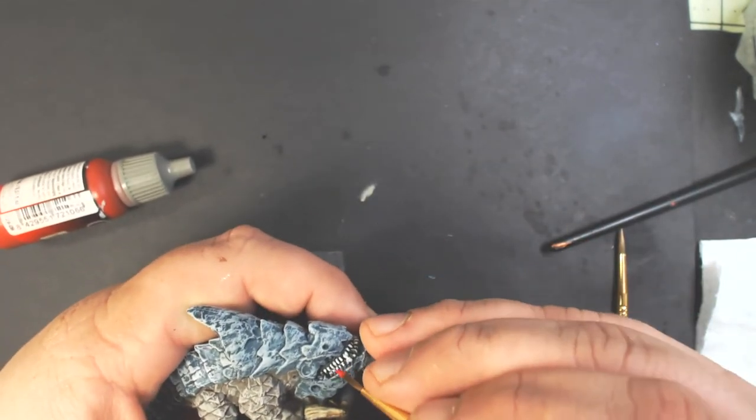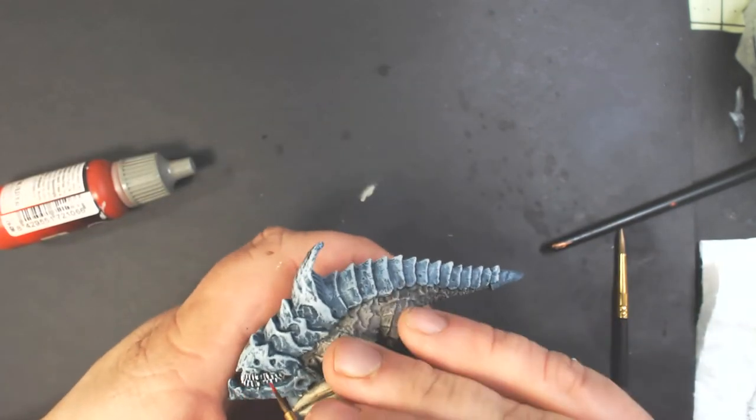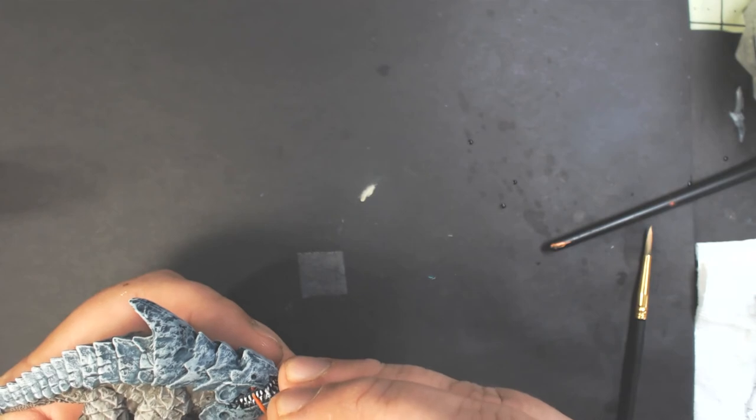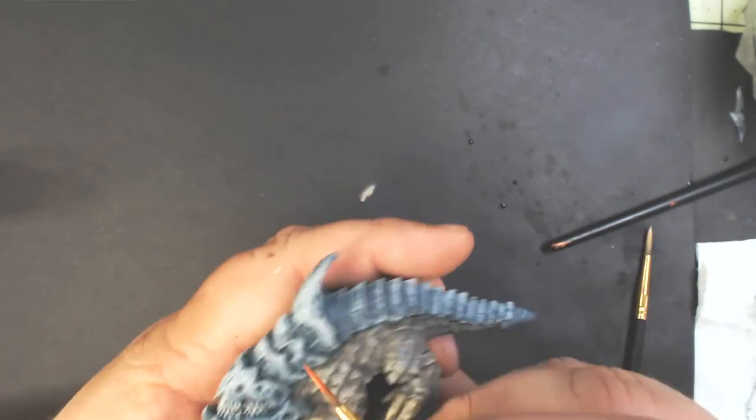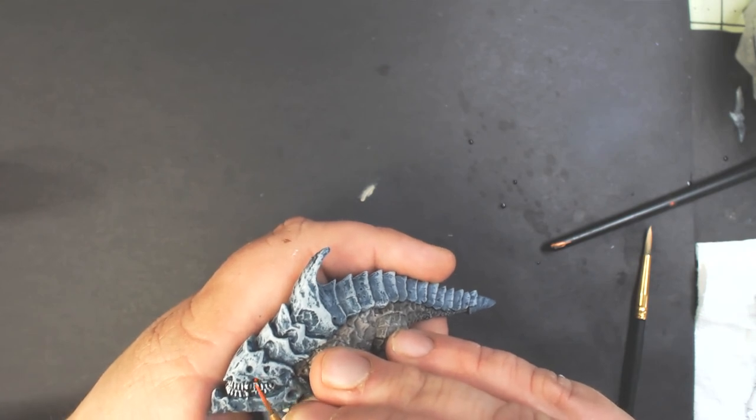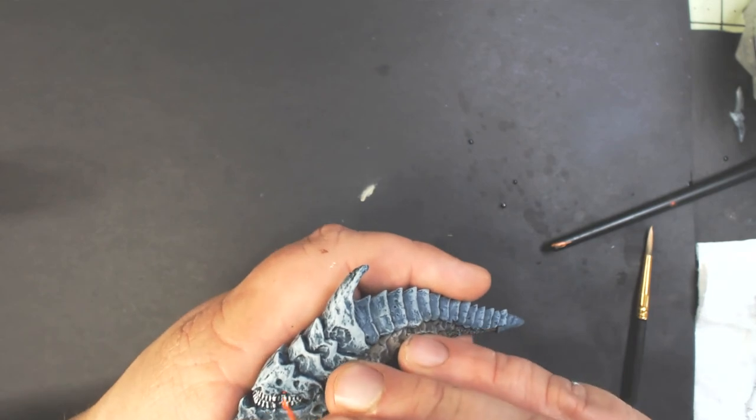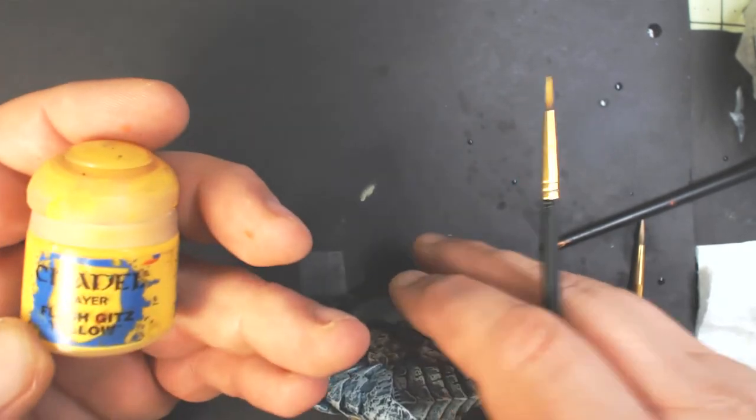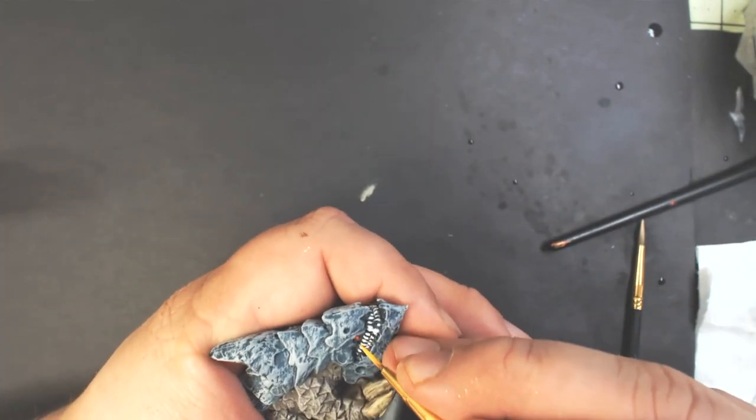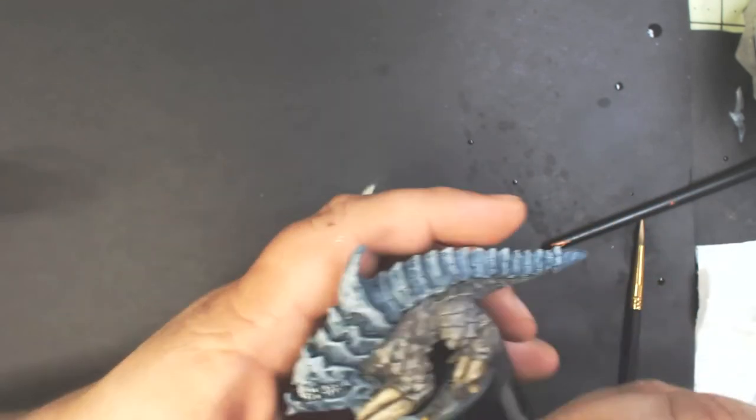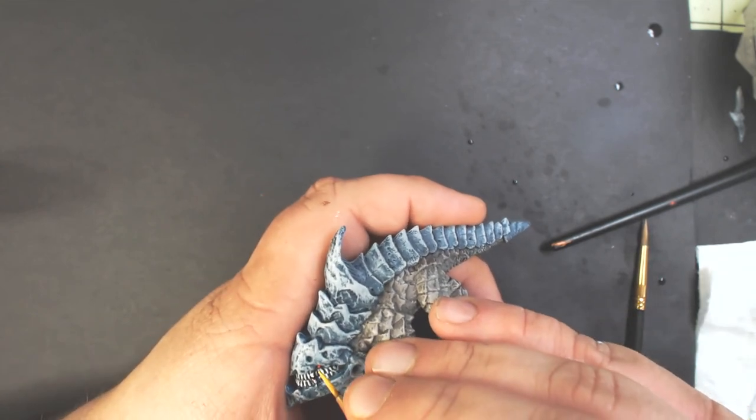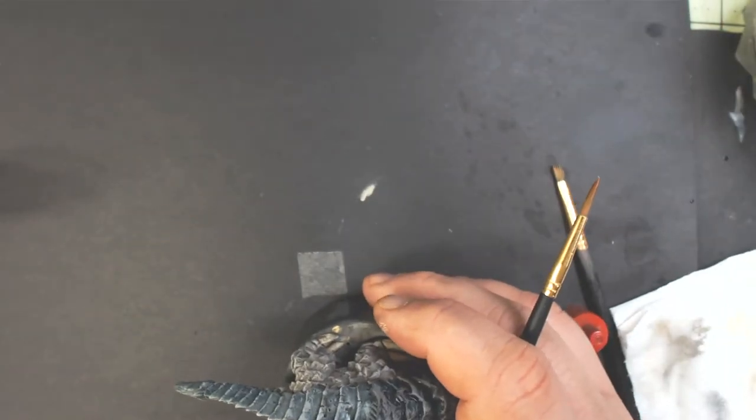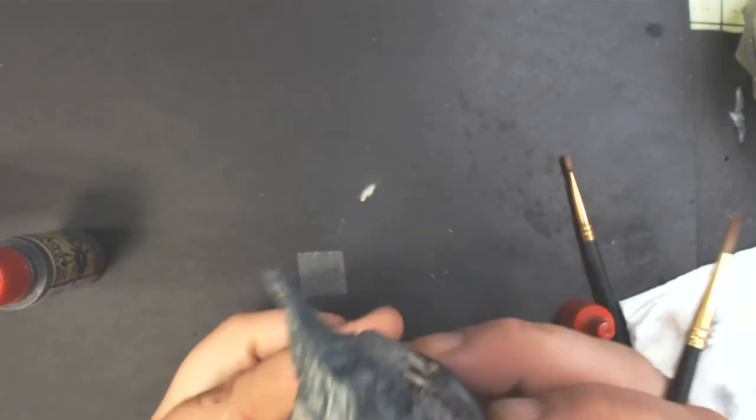Now I've got some Vallejo Game Color Scarlet Red. And I'm going to paint the little eyeballs. Now we've got some Citadel Flash Gitz Yellow. And we're just going to make a small dot of the yellow in the center of the red. There you can see I've got some orange paint on my Boulay which I had to cover up.